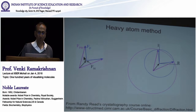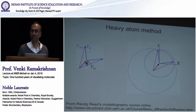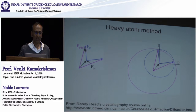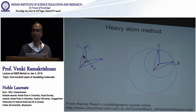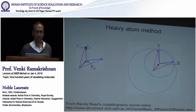So if the scattering from the heavy atom is here and the scattering from the protein is here, the total sum should be over here. The problem is, once you know where the heavy atom is, you can get both the direction and amplitude of that vector. But you can only measure the magnitude of the protein scattering vector FP and FPH — you don't know what direction they have. But the trick is you could draw a circle from this point with a radius FP.